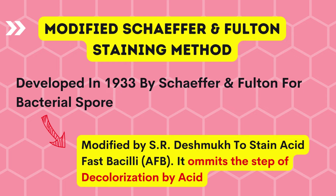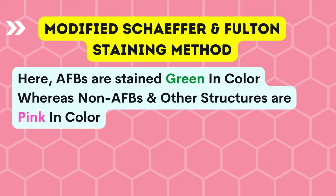One more method has been introduced — a modification of the Schiffer and Fulton staining method for staining acid fast bacilli, i.e., Mycobacterium tuberculosis. Originally the Schiffer-Fulton method was introduced in 1933 for bacterial endospores, but this method was modified by S.R. Deshmukh to stain acid fast bacilli. An important aspect of this method is that it omits the decolorization step with 20% H₂SO₄, and it is as effective as the Ziehl-Neelsen staining method. In this method, AFB appear green in color while non-acid fast bacilli and other structures appear pink in color.